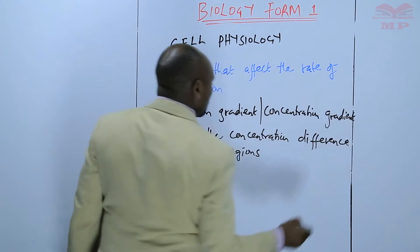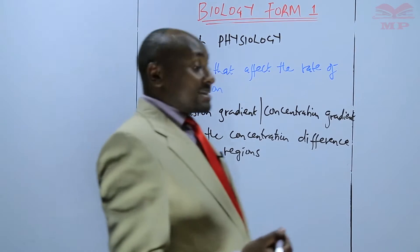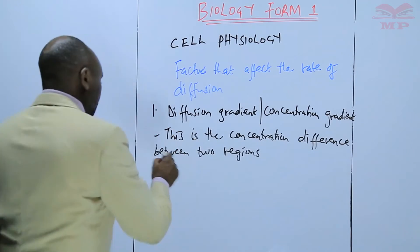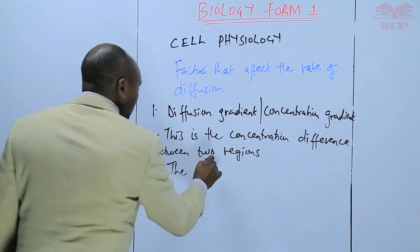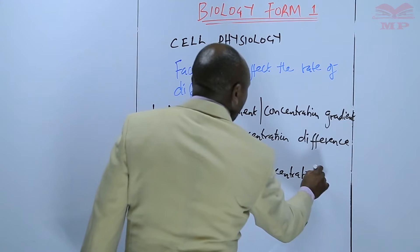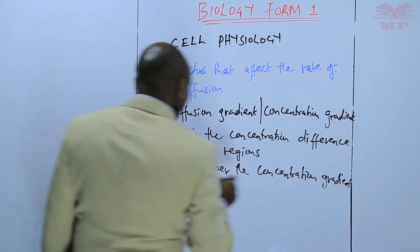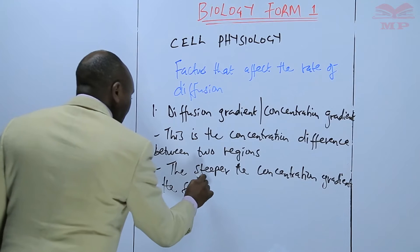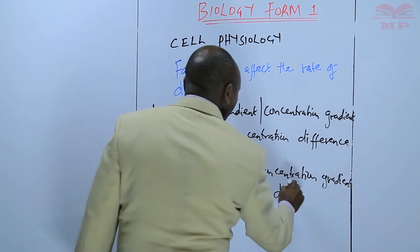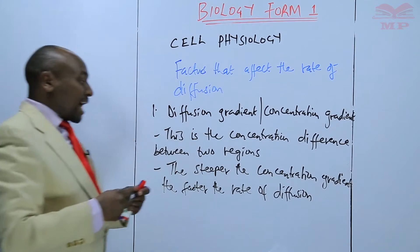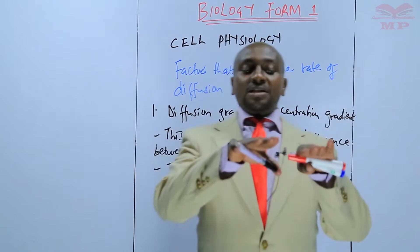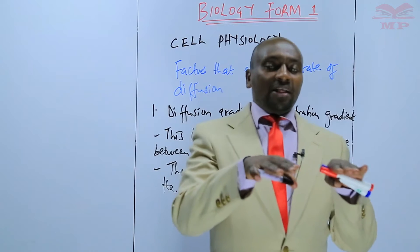The concentration difference between two regions. The higher the concentration gradient, the faster the rate of diffusion. Or we can say, the steeper the concentration gradient, the faster the rate of diffusion. So if two surfaces have a very wide difference between them, then the rate of diffusion will be faster. But if the difference is almost the same, then the rate will be slower.